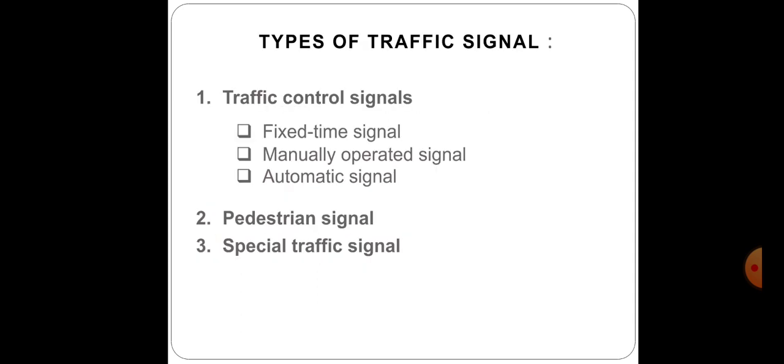Today we're going to discuss the different types of traffic signal. Traffic signals may be broadly classified into three types: traffic control signals, pedestrian signals, and special traffic signals. Traffic control signals are further classified as fixed time signals, manually operated signals, and automatic signals.